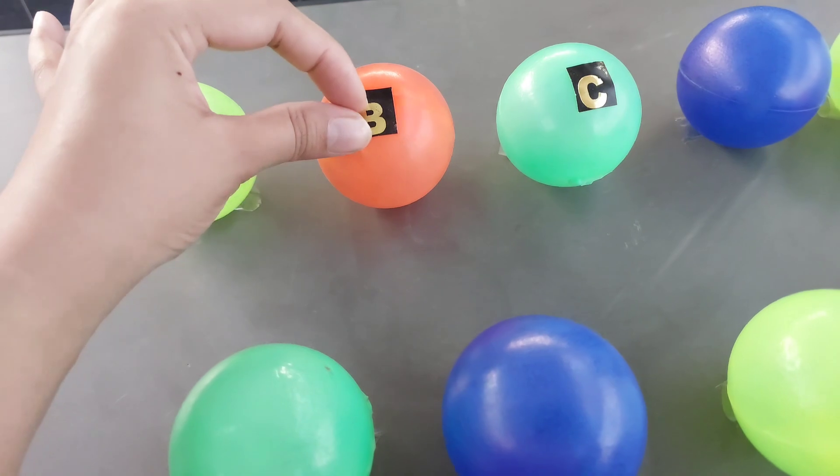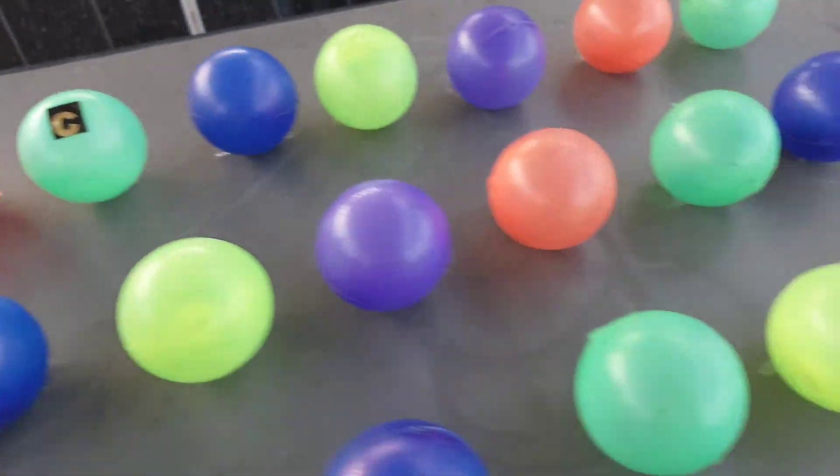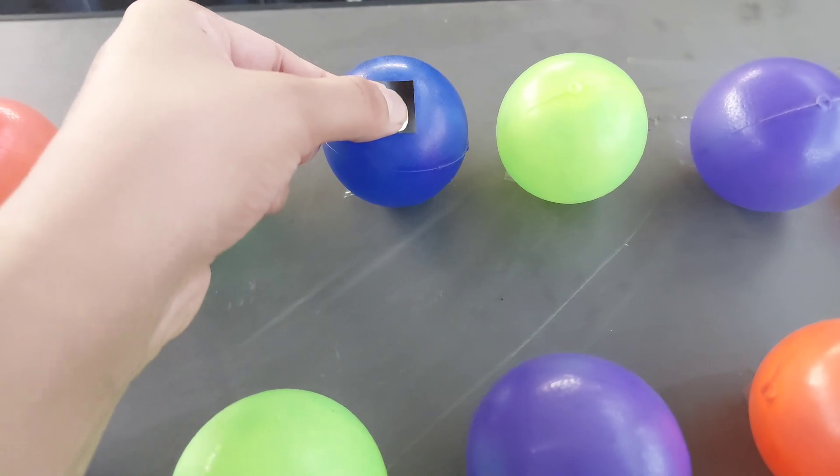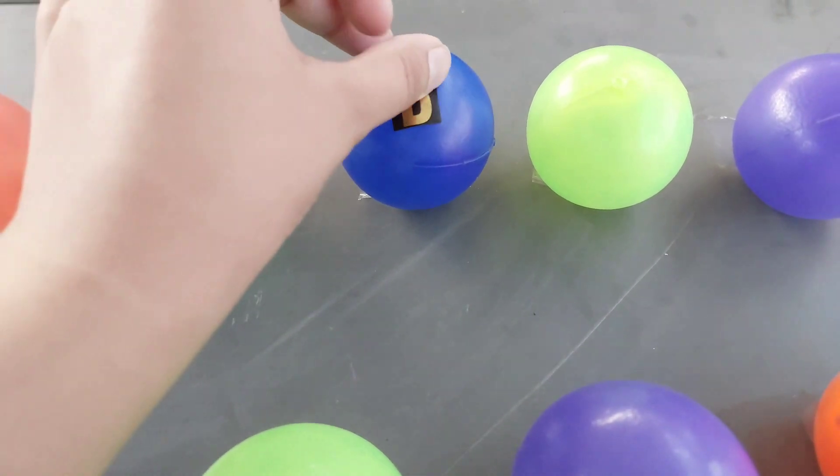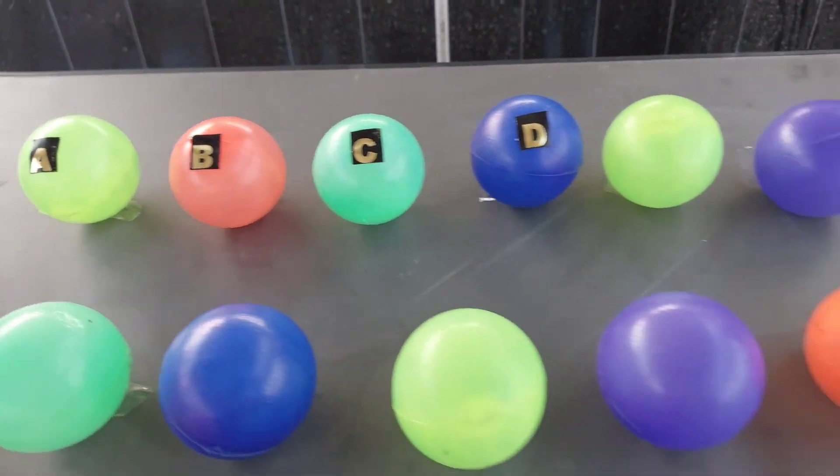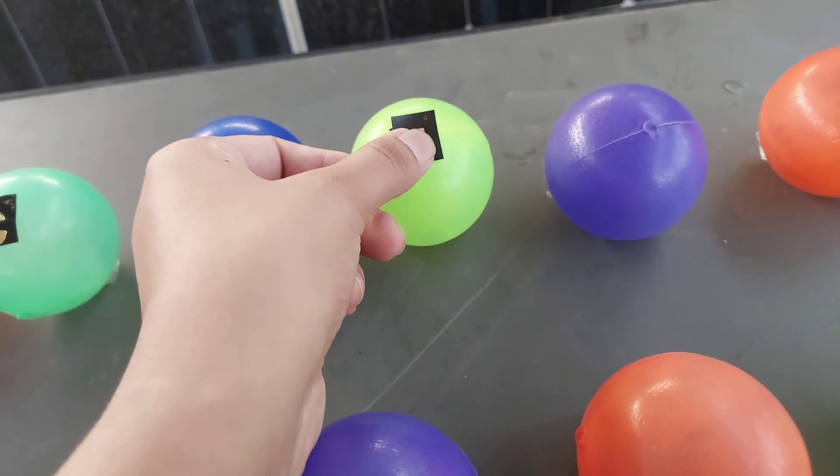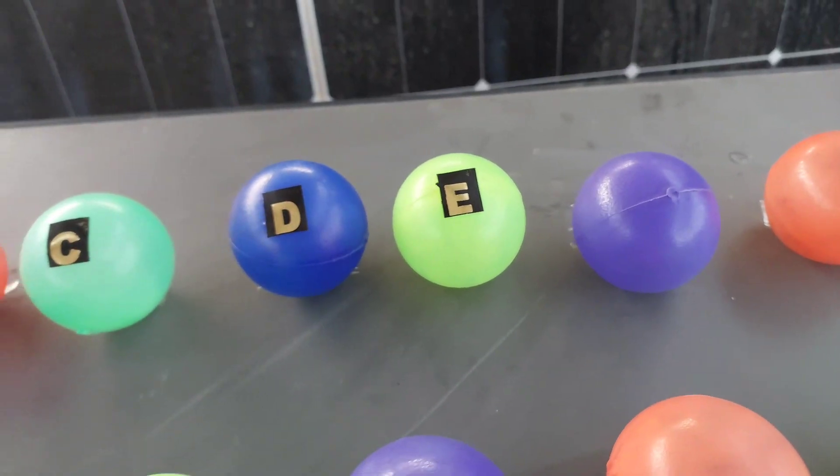The letter D. D is for dog. Where is the letter next? This is the letter E. E is for egg.